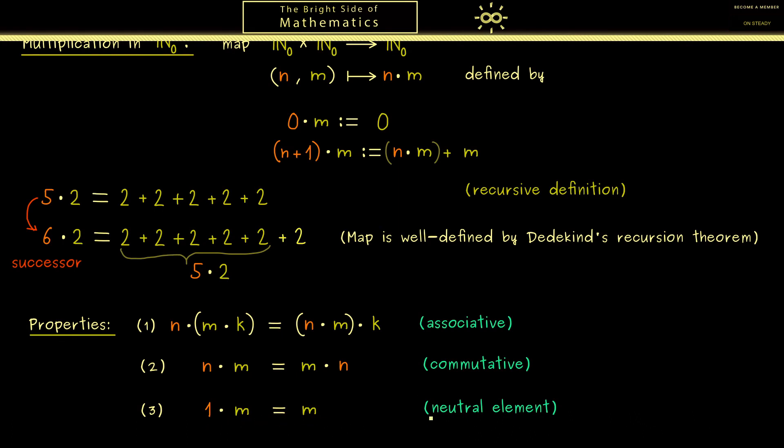And the last one we immediately get from the definition is simply 1 times m is always m. So we have the number 1 as the neutral element with respect to the multiplication. Now please recall with respect to the addition this was the number 0, but otherwise we have the same calculation rules for both operations.